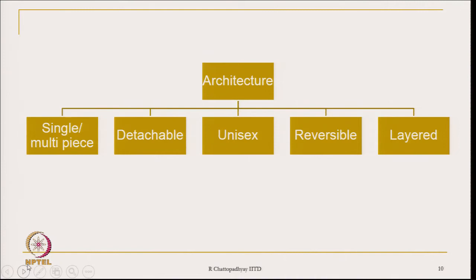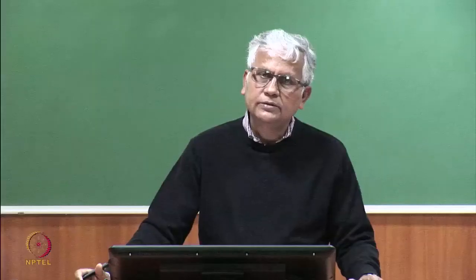Now, what are the different types of architectures practiced for the design of textile products? These are: single or multi-piece products, detachable architecture, unisex architecture, reversible architecture, and layered architecture. So we have a list of five types of architecture which are generally practiced in textile products.